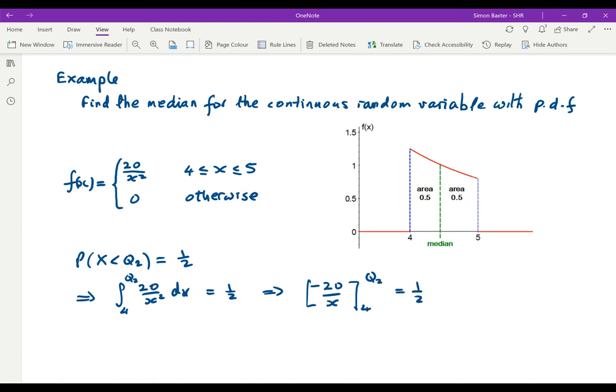If we work with that, we get -20/Q₂, putting Q₂ in first, minus, minus because it's the bottom limit, and 20/4 is 5. If we work that out, you will find that Q₂ is 4 and 4 ninths.